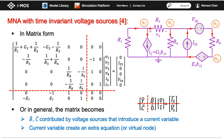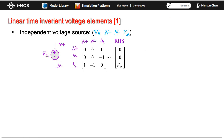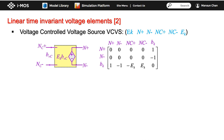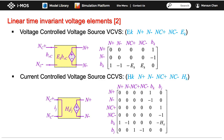The matrix stamp for an independent voltage source adds one additional row and column per voltage source added. The stamp for a current-controlled current source is similar. The stamp for a voltage-controlled voltage source is again very similar. For a current-controlled voltage source, we need to know the controlling current, so two additional branch equations must be added to the matrix.